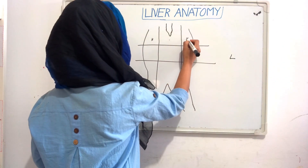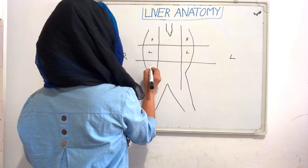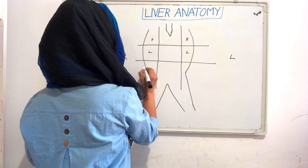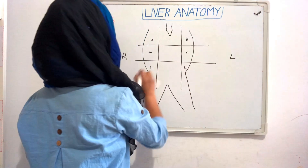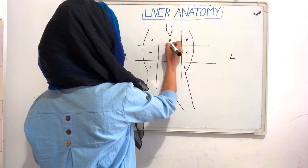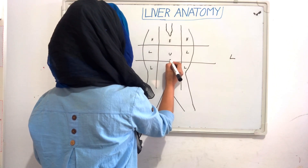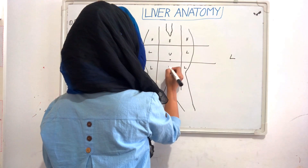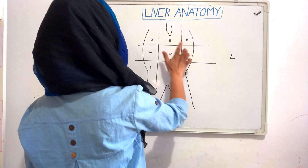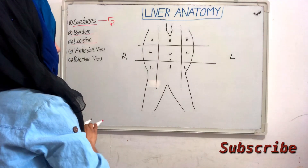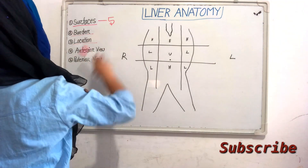This is the left hypochondrium, this is the right lumbar, this is the left lumbar, this is the right iliac, this is the left iliac, and this is the epigastrium. This is the umbilical region and this is the hypogastrium. So these are the 9 regions of our abdomen. Now we will see where our liver is located.